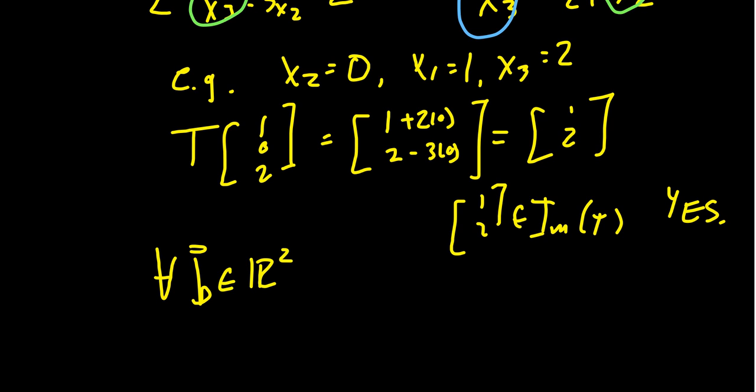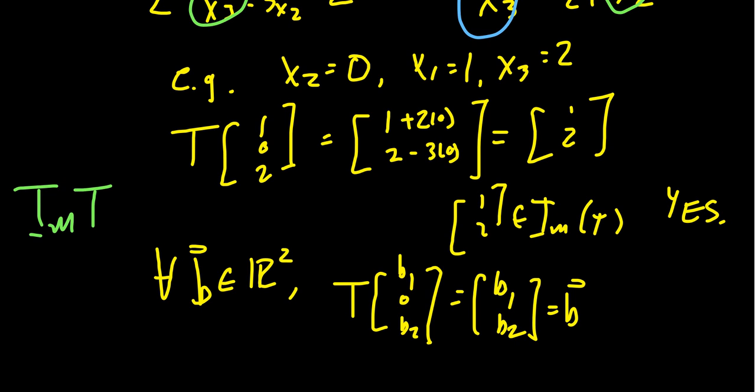For any vector b here, we saw that T(b₁, 0, b₂) will equal (b₁, b₂), which is our vector b. So we've also now computed that the image of this transformation is all of R². Every vector in the codomain is actually hit by this function, because you could just kind of basically ignore the second component if you want to.